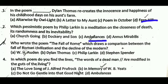Question number three: who wrote the poem The Fall of Rome, which draws a comparison between the fall of Roman civilization and the decline of the modern? The correct answer is A, that is W.H. Auden.